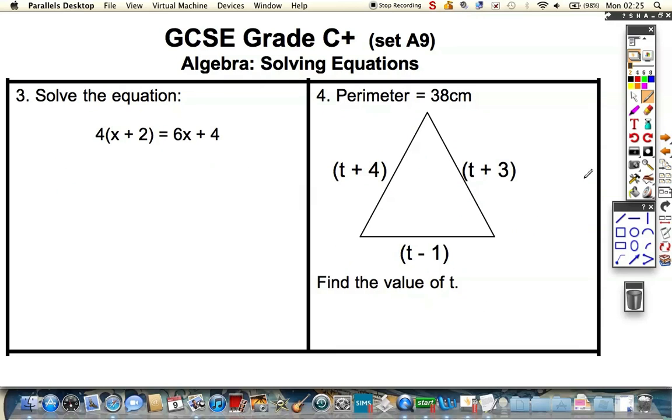Okay, next couple of questions. So pause it, go ahead if you wish. This question, I'm going to do a similar method to the last question, except I'm going to not divide by the 4 straight at front. I like expanding the brackets first. So I'm going to expand the brackets. This gives me 4x plus 8 is equal to 6x plus 4.